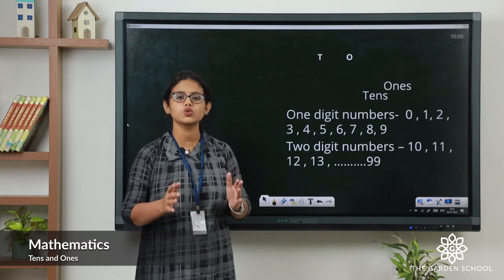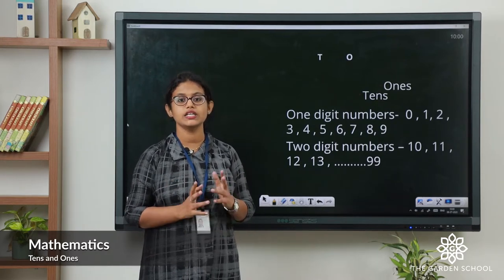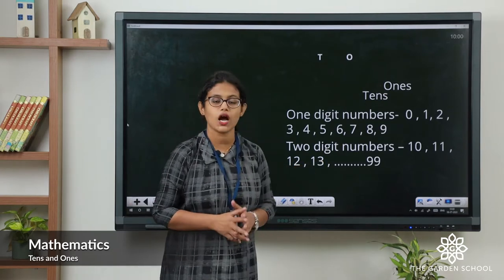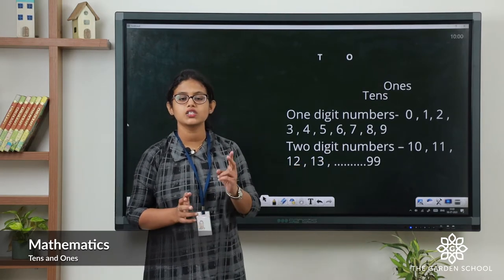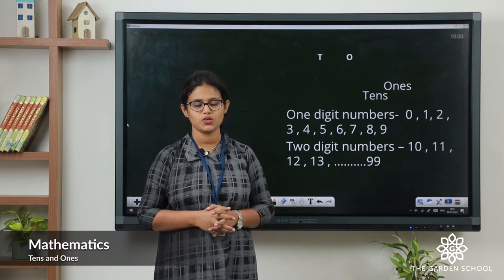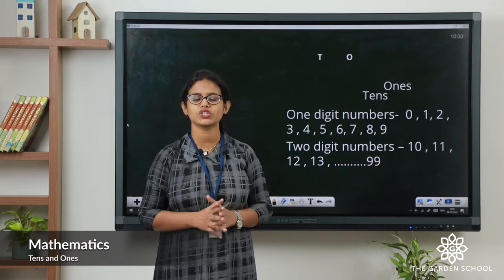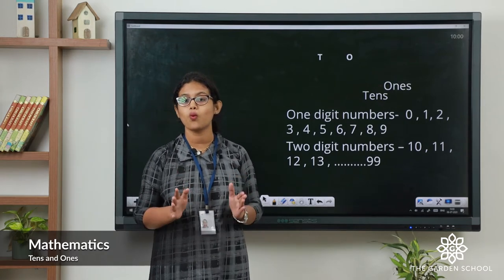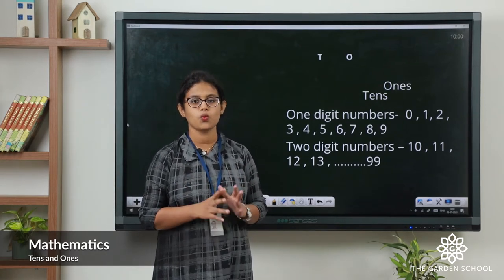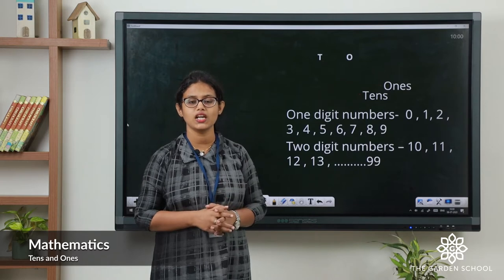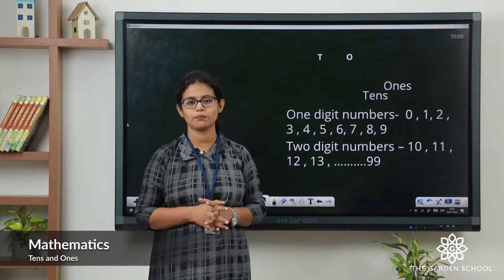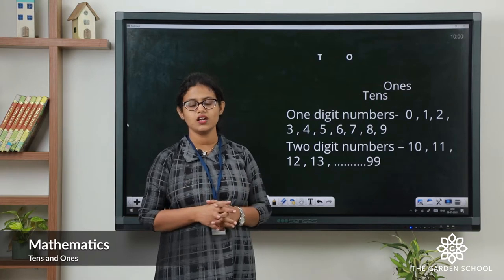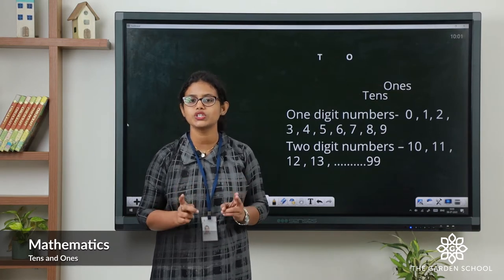So what about two-digit numbers? Digits with two numbers. Let's see number 10. How many digits are there? 2 — 1 and 0. So we call it a two-digit number. You have all learnt numbers from 1 to 100. So 0 to 9 we call one-digit numbers and numbers from 10 to 99 we call two-digit numbers.